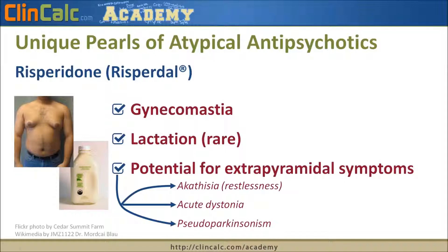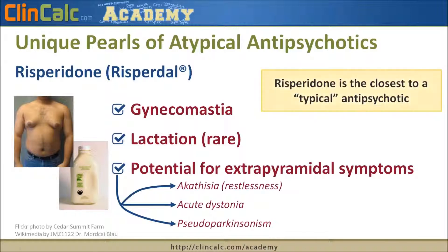The ability to cause EPS is unique among atypicals, since our atypicals usually don't cause EPS — that's more common with typicals like haloperidol. Because of both the gynecomastia and the EPS symptoms, risperidone is considered the closest atypical to a typical antipsychotic, meaning it is the most similar pharmacologically and in its adverse effect profile to something like haloperidol.